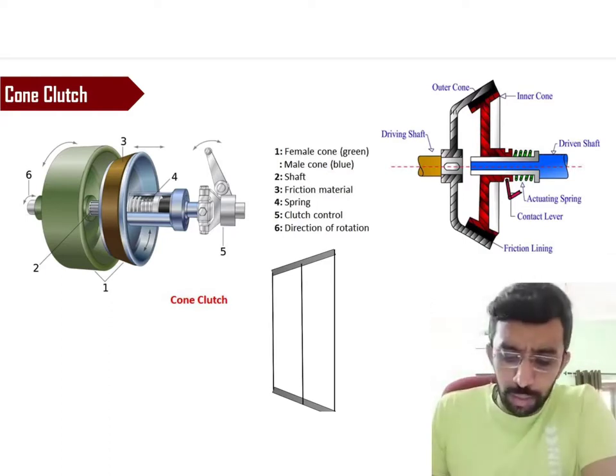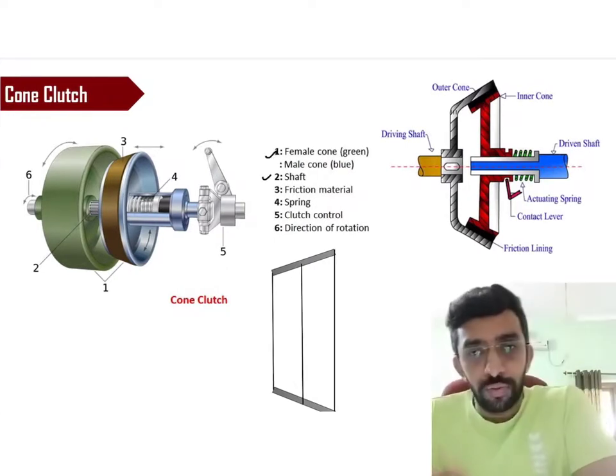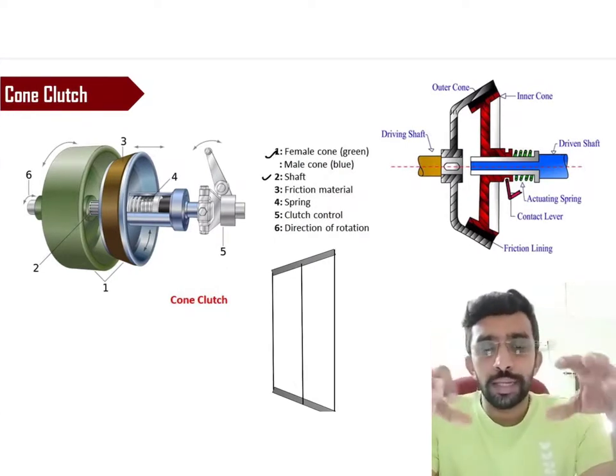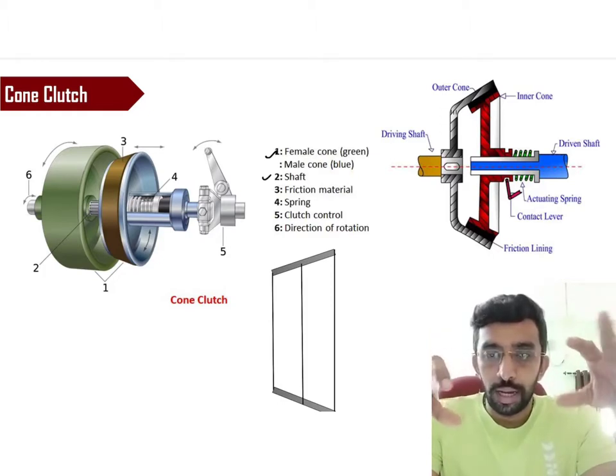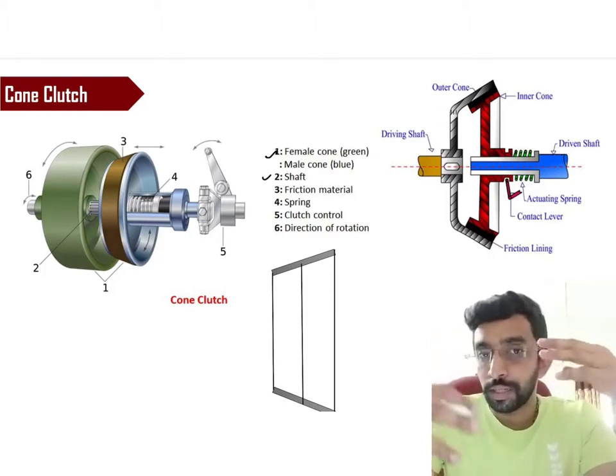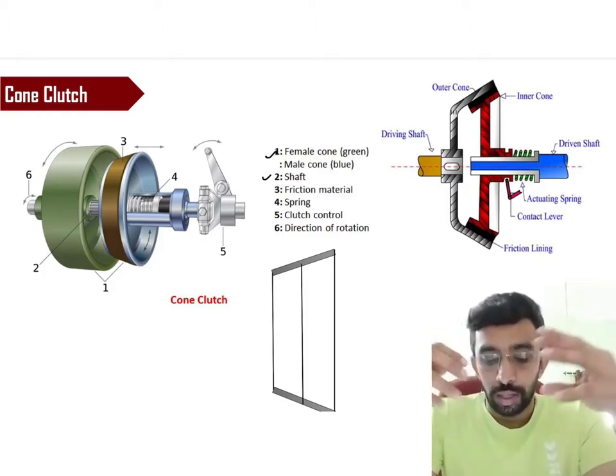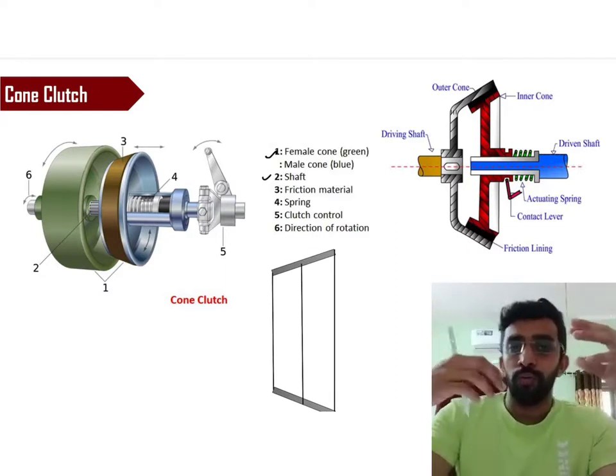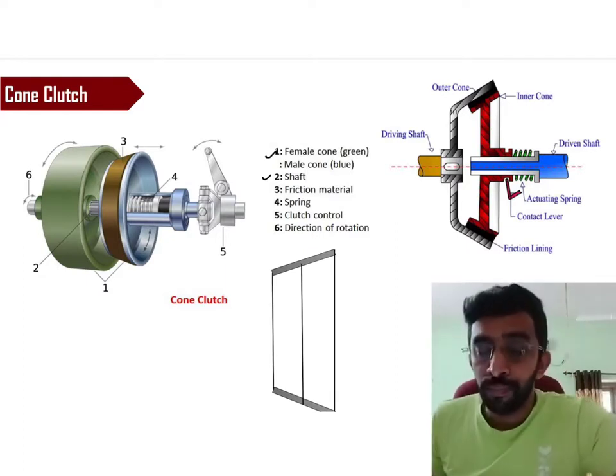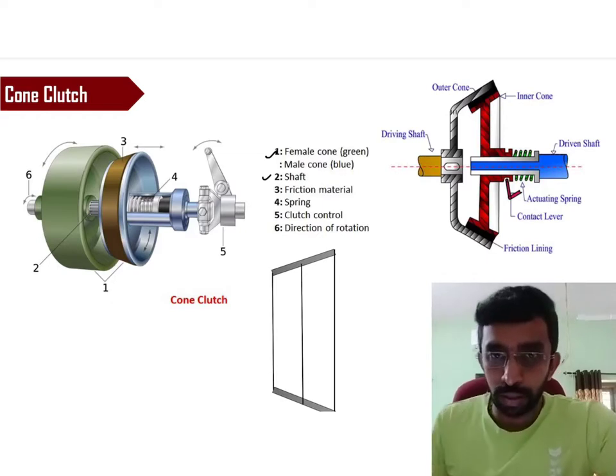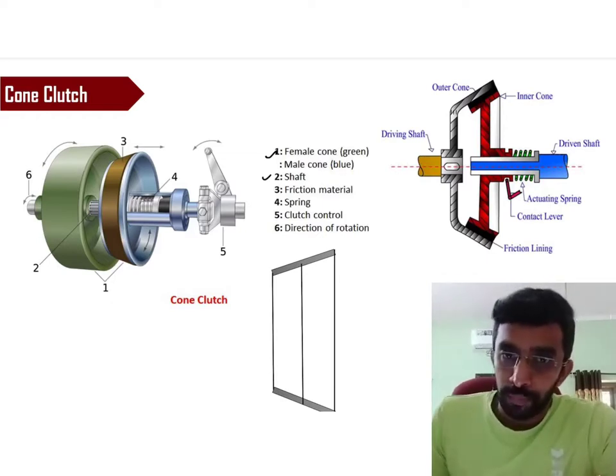So it consists of a female cone, male cone, and friction material. The working mechanism is the same. Only thing is how the friction material is being arranged. What is the criteria of arrangement or how this being beneficial for the application. All those things are the most important.